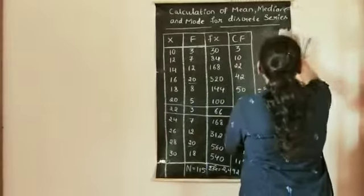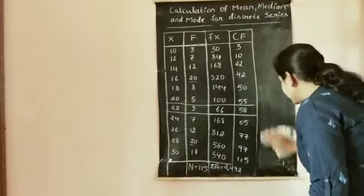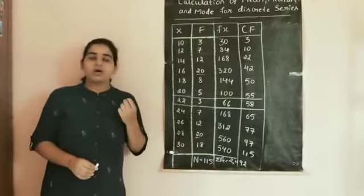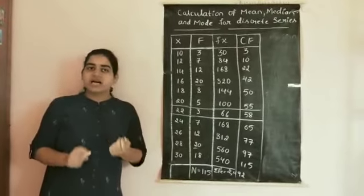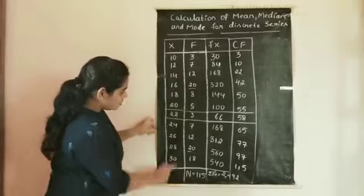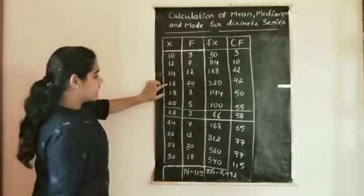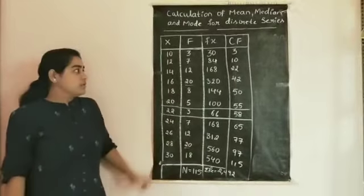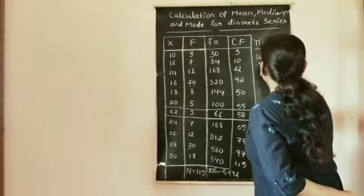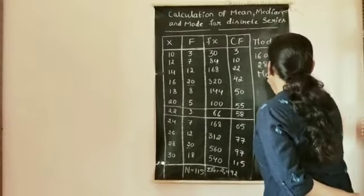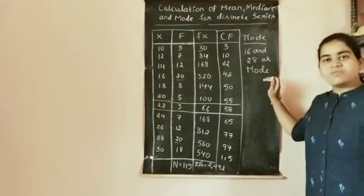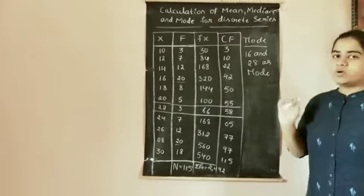Finally, we calculate the mode. Mode is defined as the most commonly occurring value — the variate value having the highest or maximum frequency. Here, variate values 16 and 28 both have the maximum frequency of 20. Therefore, the mode of this discrete series is both 16 and 28. Hope you understood — thank you.